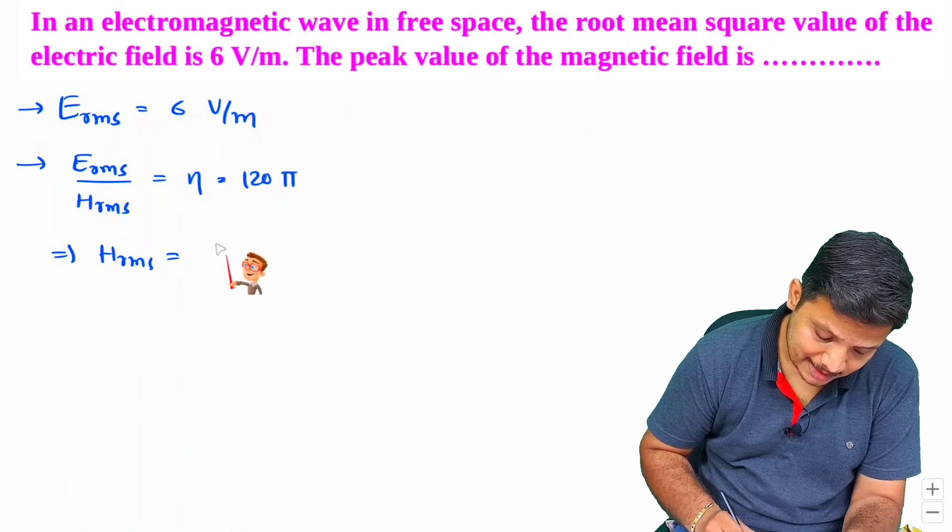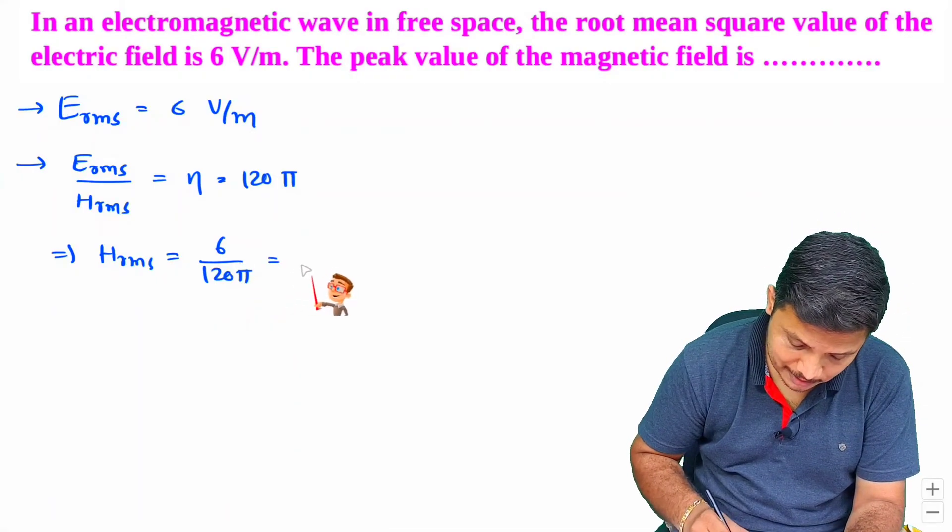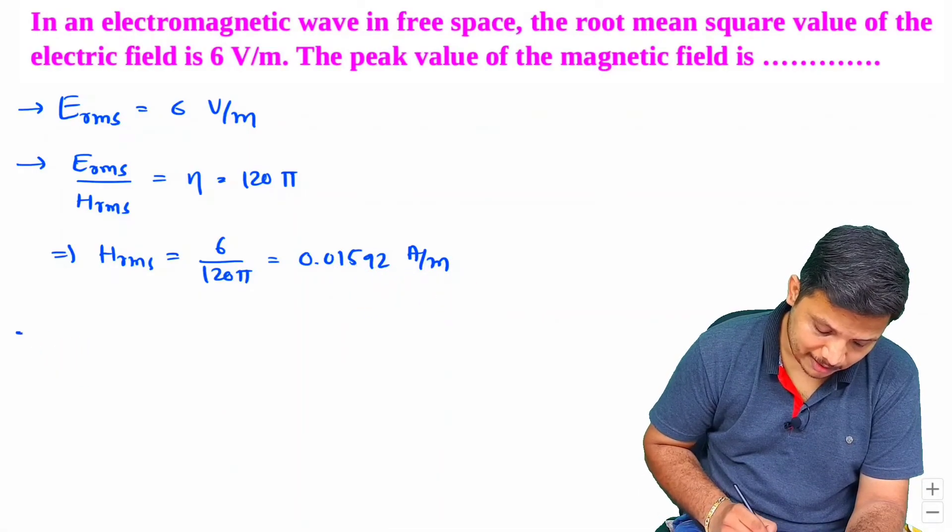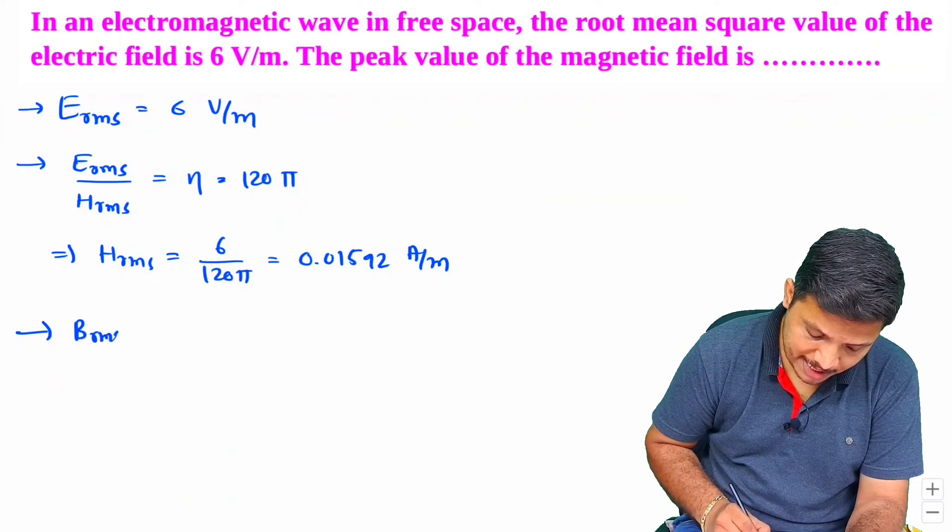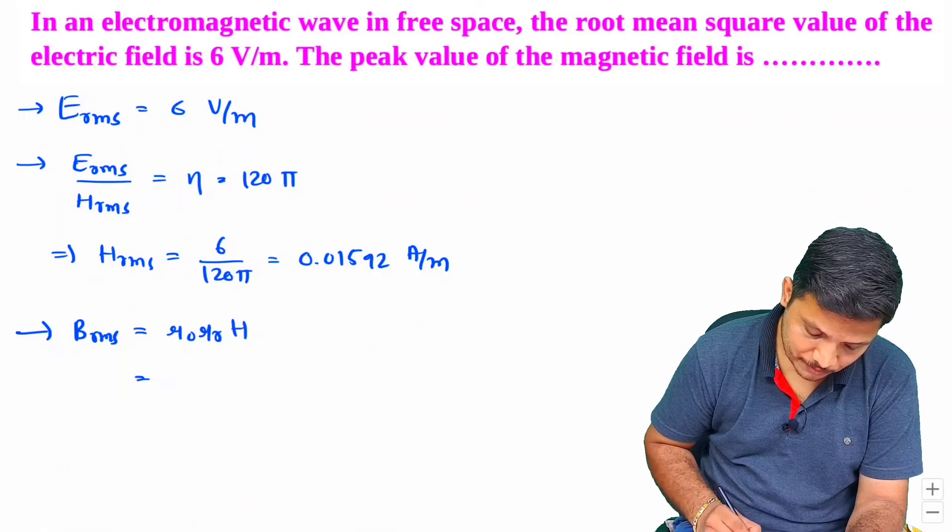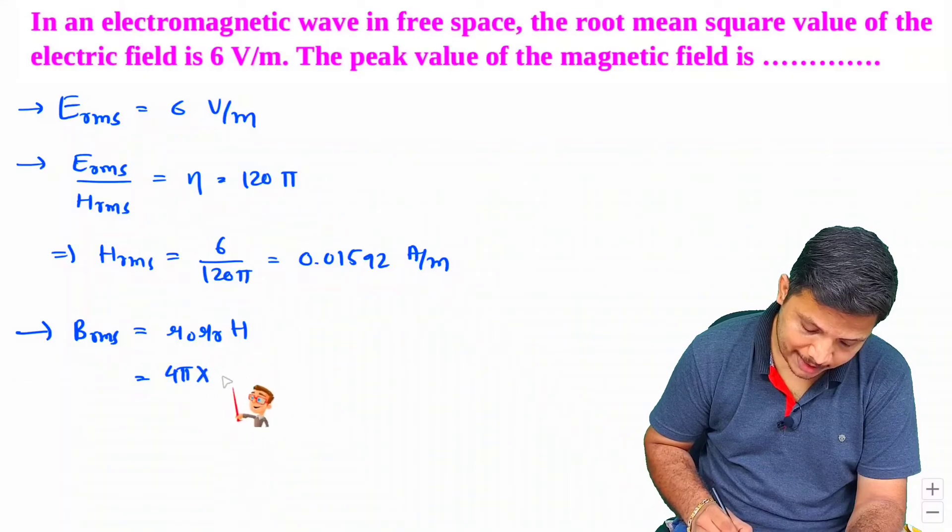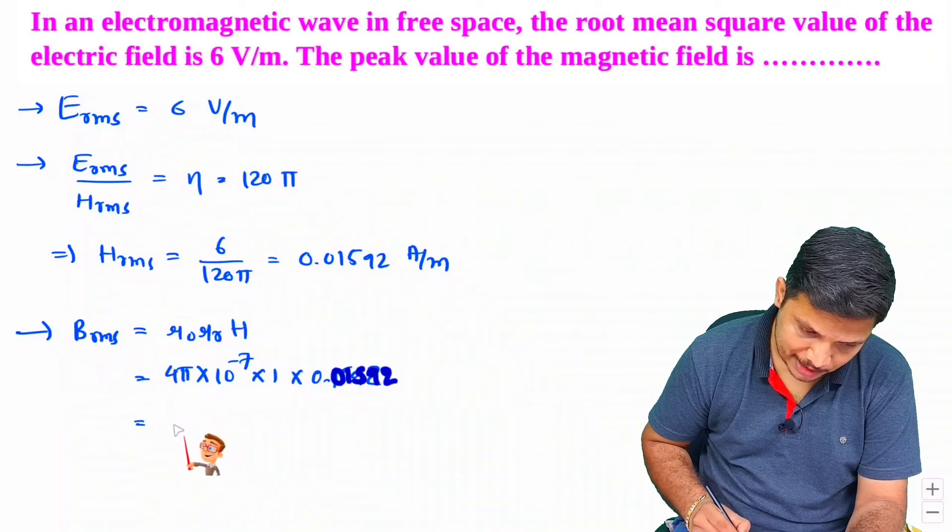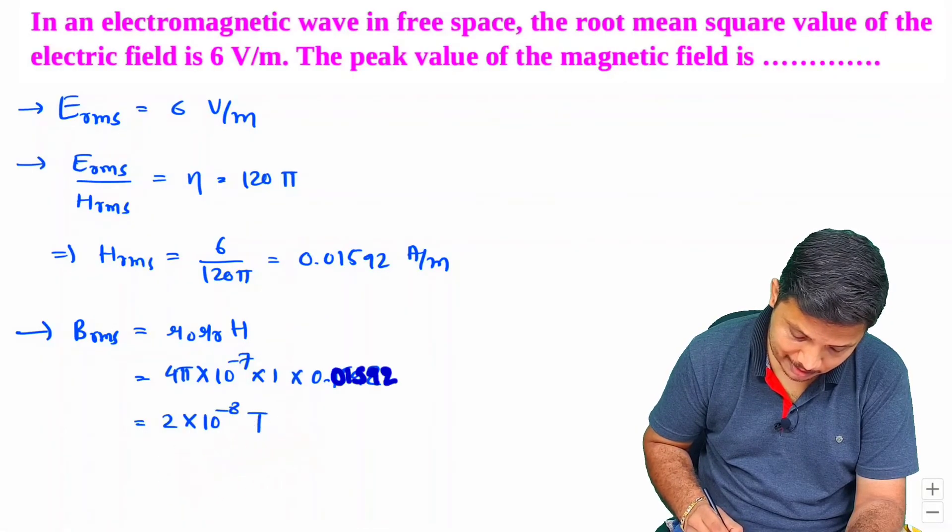So based on that we can have H_rms. So H_rms that is 6 divided by 120π. And if you calculate this, this will be 0.01592 ampere per meter. Now based on H_rms, we can have magnetic field B_rms. So that is μ₀μᵣH. Now, see free space is having μᵣ equals 1 and μ₀ is 4π × 10⁻⁷. And if you solve this, you will be having B_rms value and that will be 2 × 10⁻⁸ tesla.